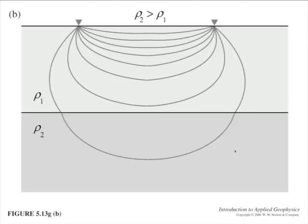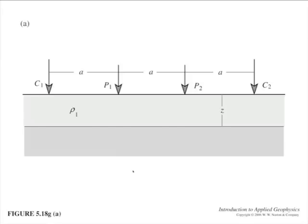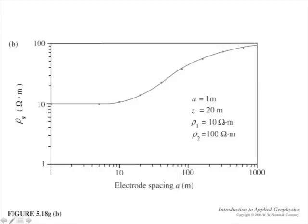Here's a resistivity increase, and what the current lines look like — refracting to be down deeper to the medium than they would be if the medium was all at rho one. And here's those current lines again where we're getting the short-circuiting effect, where rho two is less than rho one. So what we do is we build up a survey. Here's a prototype Wenner survey with a constant A spacing, potential electrodes in the middle, current electrodes on the outside, and an interface with a depth Z.